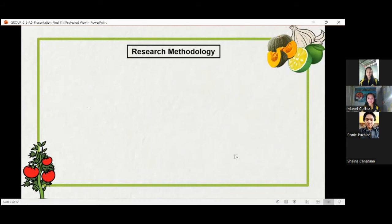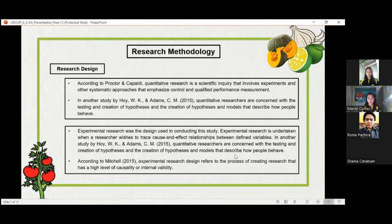Research methodology. This chapter discusses the research design, research locale, data gathering procedure, and statistical treatment of the data used by the researchers in conducting this study. Quantitative research is a scientific inquiry that involves experiments and other systematic approaches that emphasize control and quantified performance measurement, according to Proctor and Capaldi. The research design used by the researchers in conducting this study is experimental research because experimental research is undertaken when a researcher wishes to establish cause and effect relationships between defined variables.